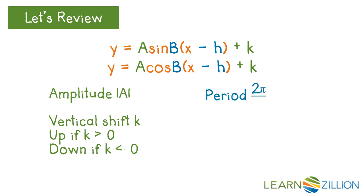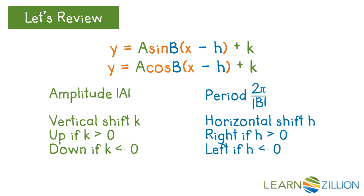B and H act horizontally. Horizontally, they are stretched or shrunk by B to make the period 2π over B. They are shifted, left or right, by H, right if H is positive, left if H is negative. Any or all of these transformations can occur at once.